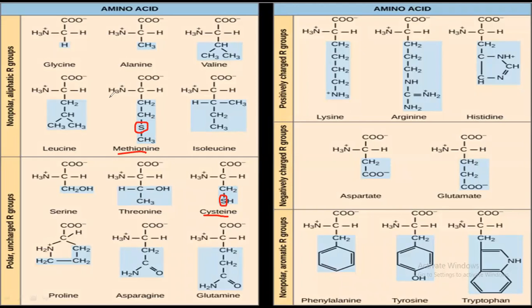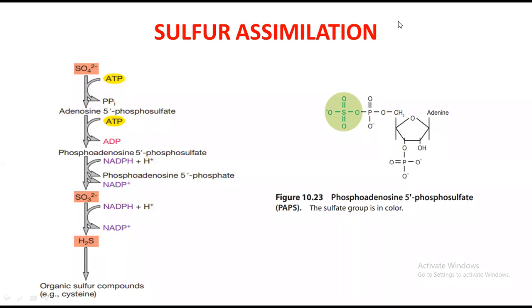Just like in the previous videos I discussed where NH3 comes from — that was covered in a separate lecture, so also watch that video. Similarly, the question arises: where does this sulfur component come from? In this video lecture I will discuss what chemical reactions take place in the incorporation of sulfur into the amino acid backbone. Watch the video till the end.